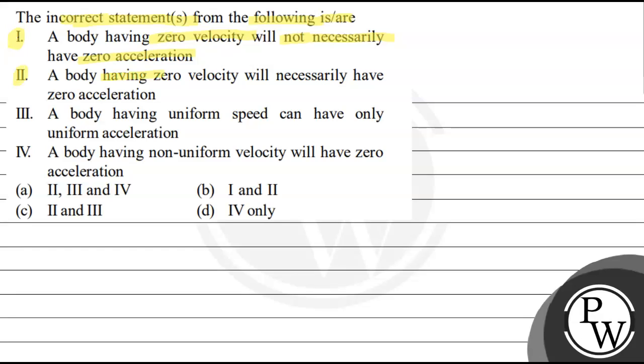Second statement: a body having zero velocity will necessarily have zero acceleration. Third statement: a body having uniform speed can have only uniform acceleration. Fourth statement: a body having non-uniform velocity will have zero acceleration.